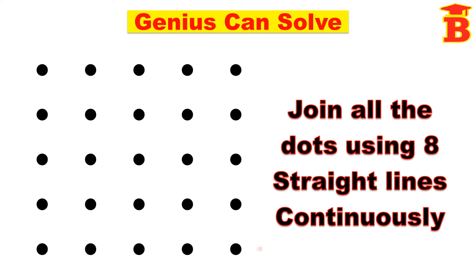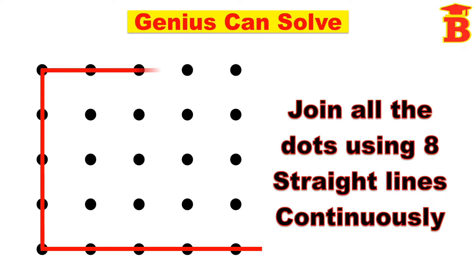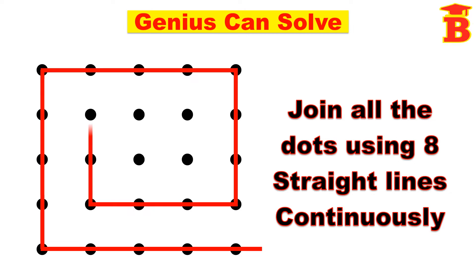For example, if we start here, this is the first line, this is the second line, this is the third line, this is the fourth line, then fifth line, then sixth line, then seventh line, and finally eighth line. Like this, we must draw the lines continuously. The lines may have any length and any direction, but we must connect all the 25 dots.